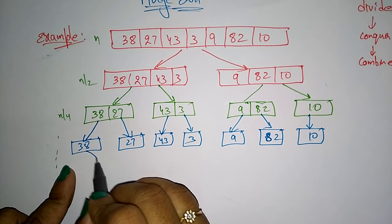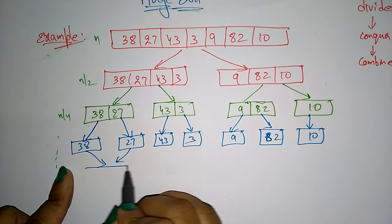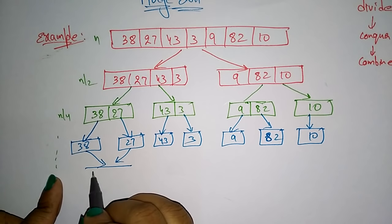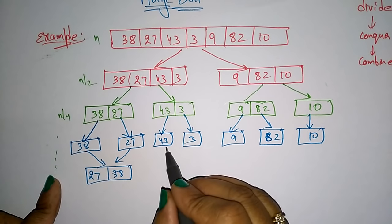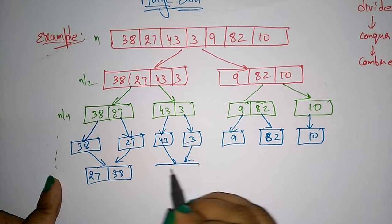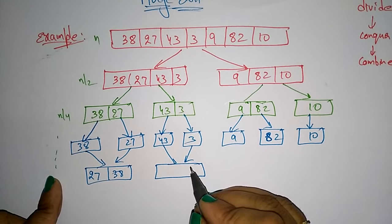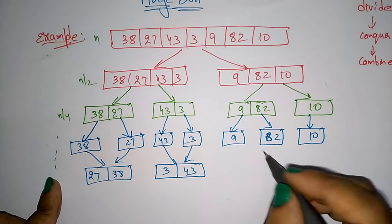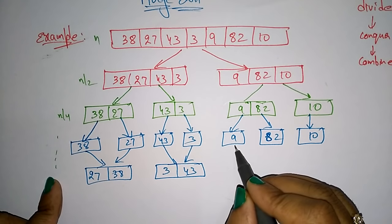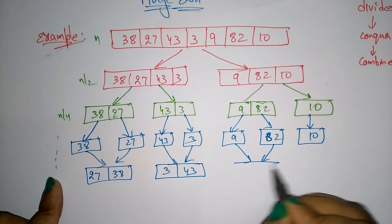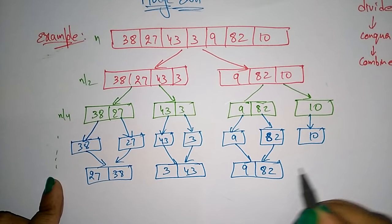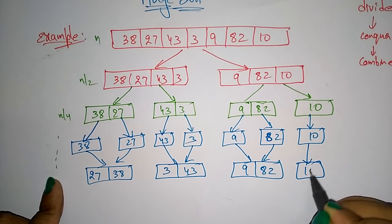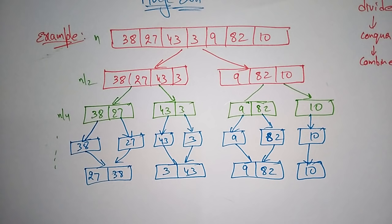Just combine these two arrays by sorting. For 38 and 27, which one is the smallest? 27, 38 — okay. You combine the array by solving the problem — that is merge sort. So just sort 3 and 43, giving 3, 43. And here also sort 9, 82, and 10. This is the technique of merging.